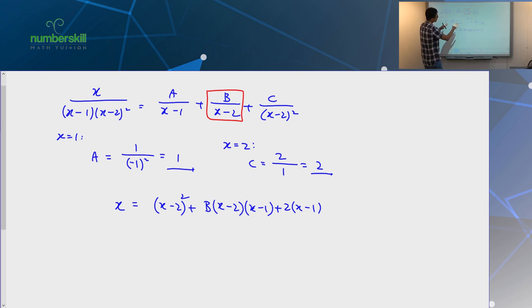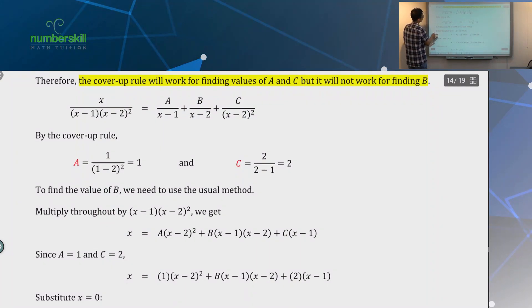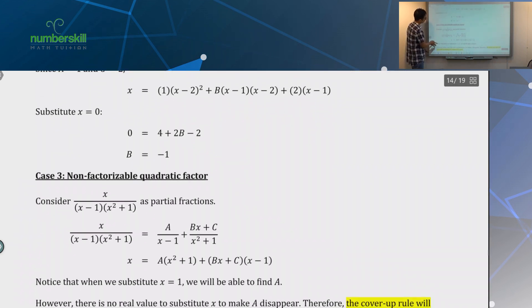So, cover rule still works in a way that it actually allows you to do things a bit faster. Out of the three unknown, you can do two that's fast. Why not? So, highlighted there. Cover rule only works for the finding value of A and C, but will not work for B. So, pay attention to that. So, this is basically what I just showed you earlier on.